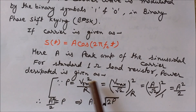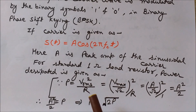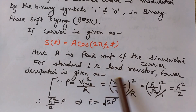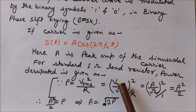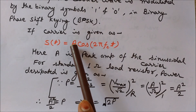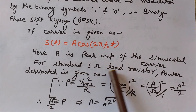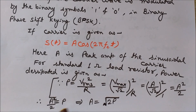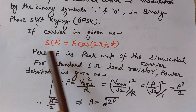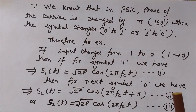Power is given as V_rms squared divided by R. For a standard 1-ohm load resistor, P = V_rms² / R. Since V_rms = V_max / √2, we get P = (A / √2)² / 1 = A² / 2. Therefore A = √(2P), where P is the dissipated power. In the equation, we will replace the maximum amplitude A by √(2P).